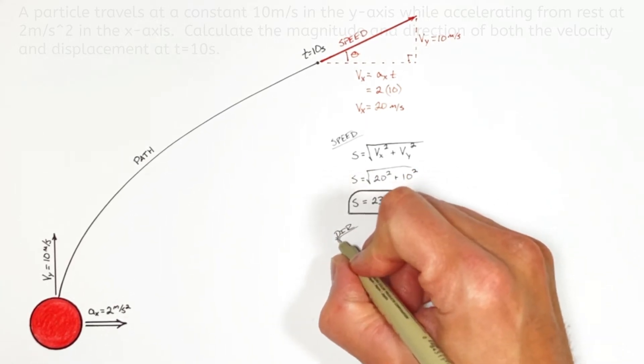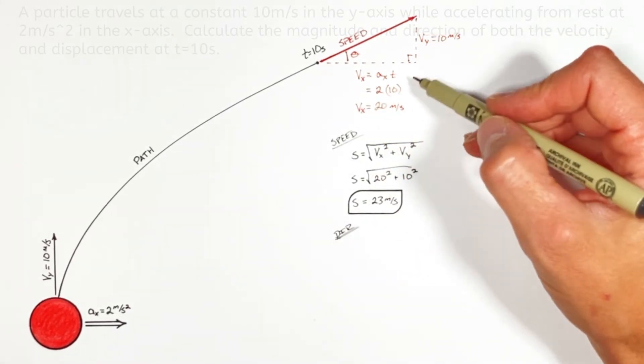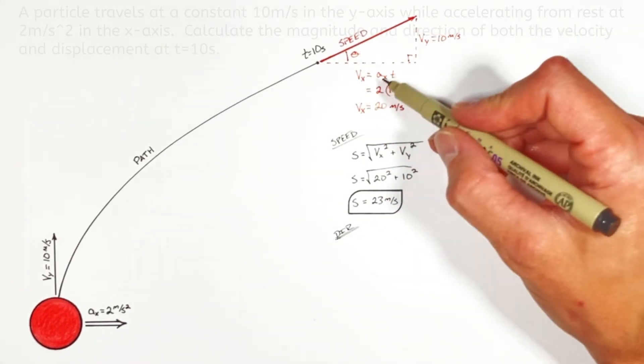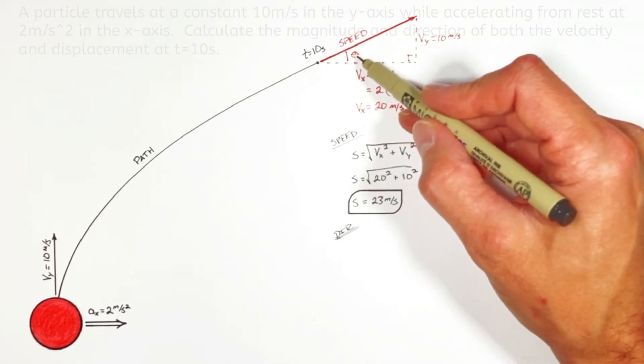And solving for the direction is a similar issue. This is nothing other than a right triangle. We know the opposite and adjacent sides, we're trying to solve for this angle right here.